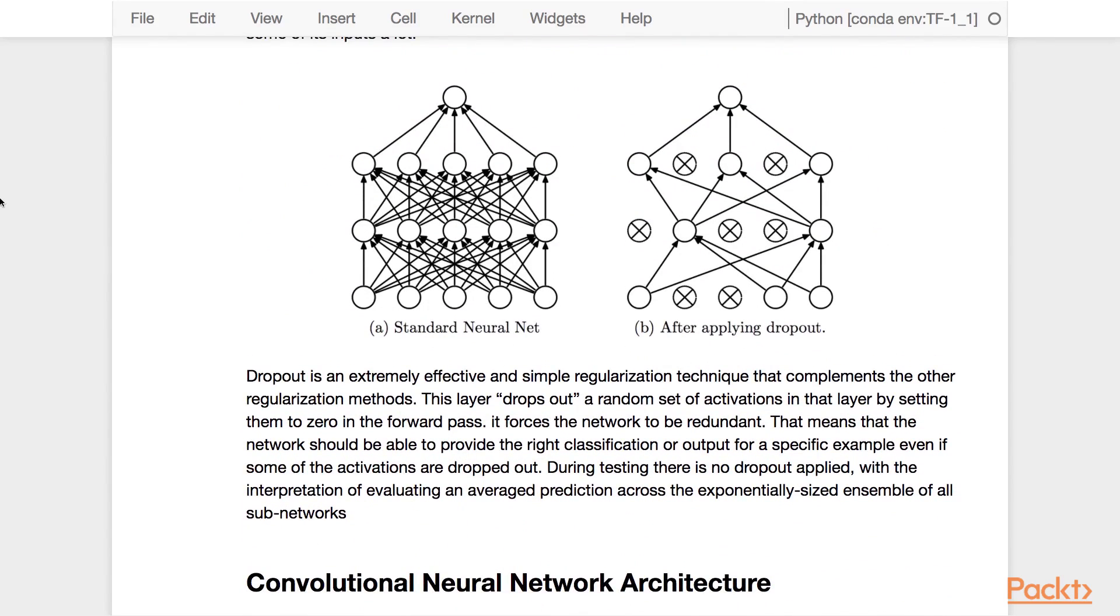Dropout is an extremely effective and simple regularization technique that complements other regularization methods. This layer drops out random sets of activations in that layer by setting them to zero in the forward pass. This forces the network to be redundant. That means the network should be able to provide the right classification or output for a specific example, even if some of the activations are dropped out.